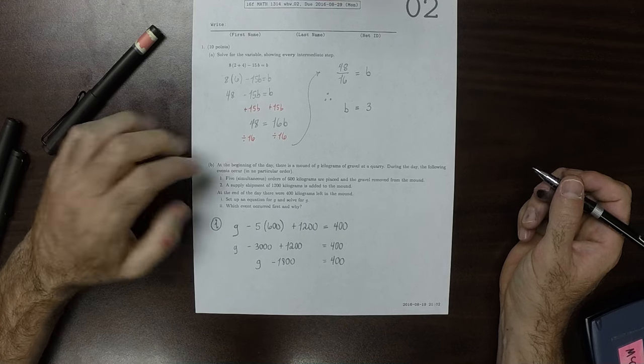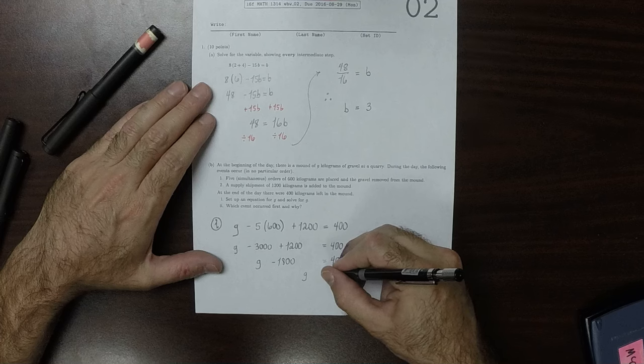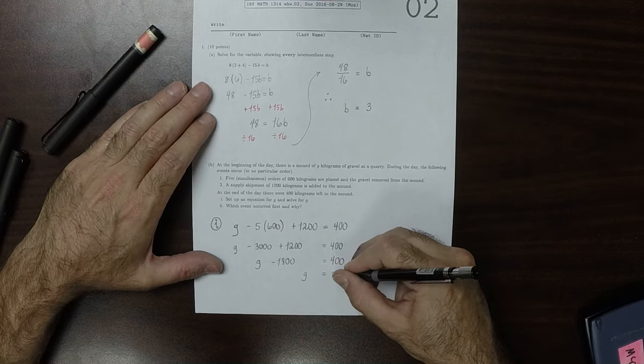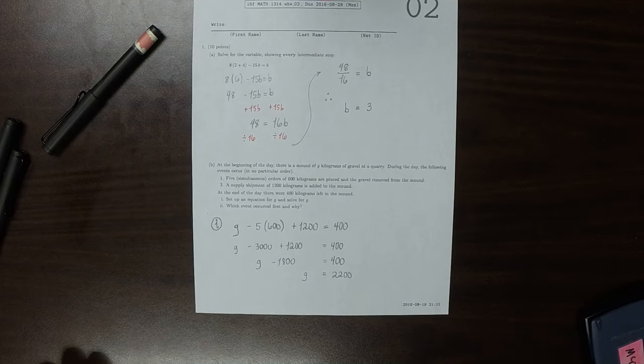And then if we move the 1,800 to the other side, G must be 2,200. So there's 2,200 kilograms at the beginning of the day.